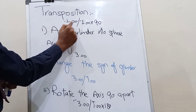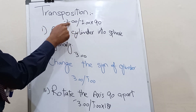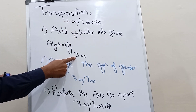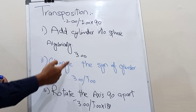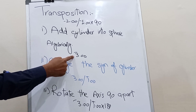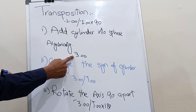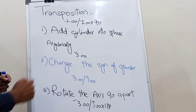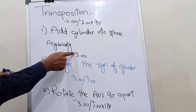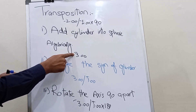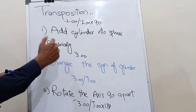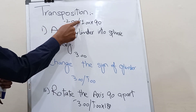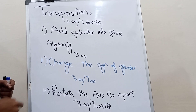When we add both values, the resultant value would be minus 3, and minus 3 is our new spherical correction. The sign with the new sphere would be minus, because we have both values in minus.